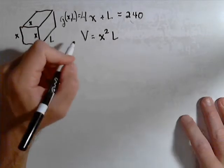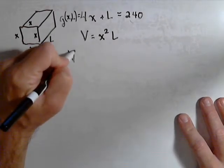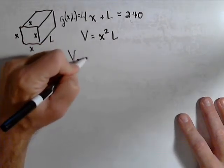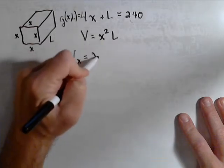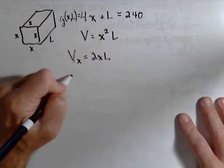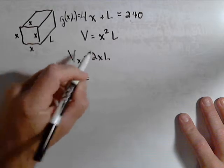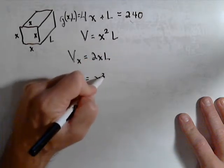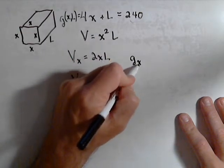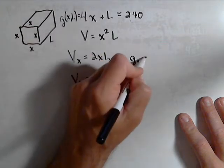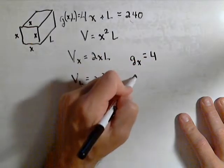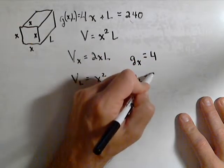Using Lagrange multipliers we need our partials. So v sub x will be 2xL, v sub L will be x squared, g sub x will be 4, and g sub L will be 1.